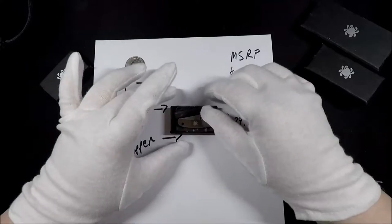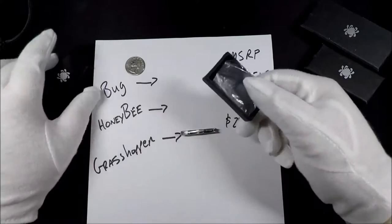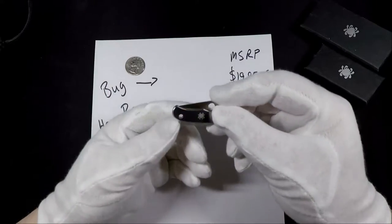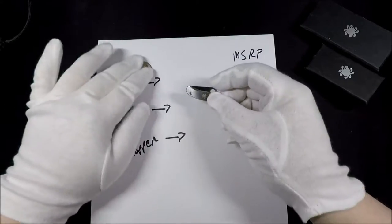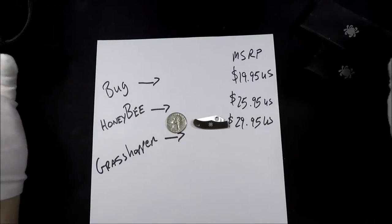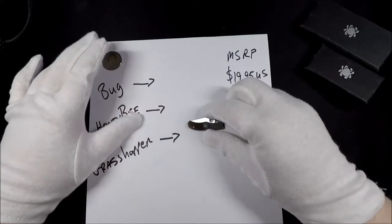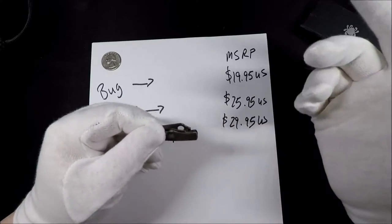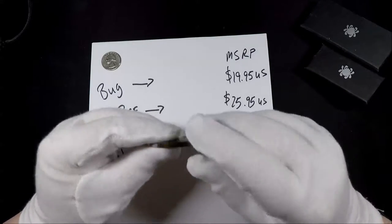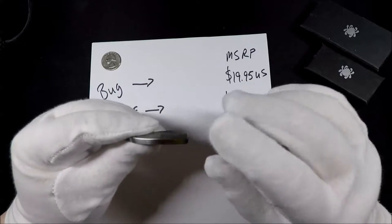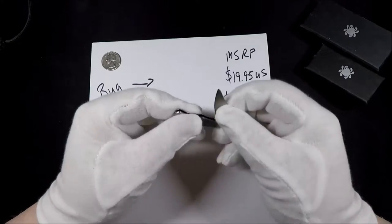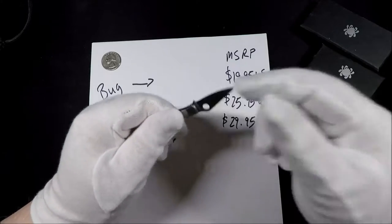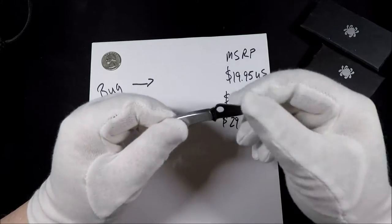This is a little bitty knife, and as you can probably tell, it's pretty small compared to say a quarter, like so. The Bug is $19.95, the manufacturer's suggested retail price. You can find these cheaper than that. Amazon has them for a bit less, and I'll include a link down below if you're interested.